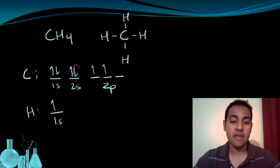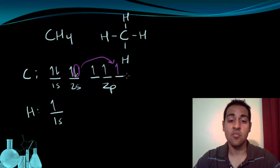So one of the 1s electrons, this one in particular, is going to be promoted, and we're going to have four single electrons available for bonding. So here we are, they're all spread out now. We have one in the 2s and three in the 2p sublevel.